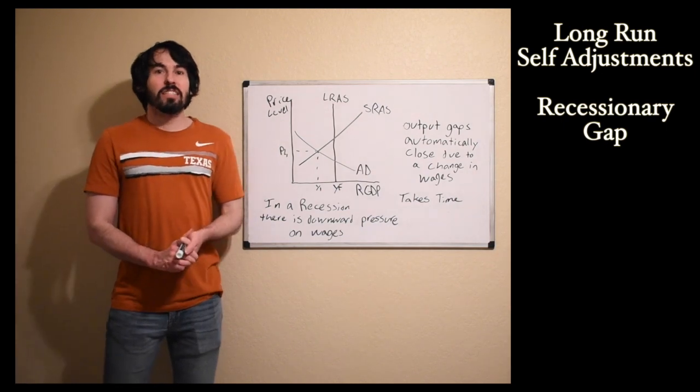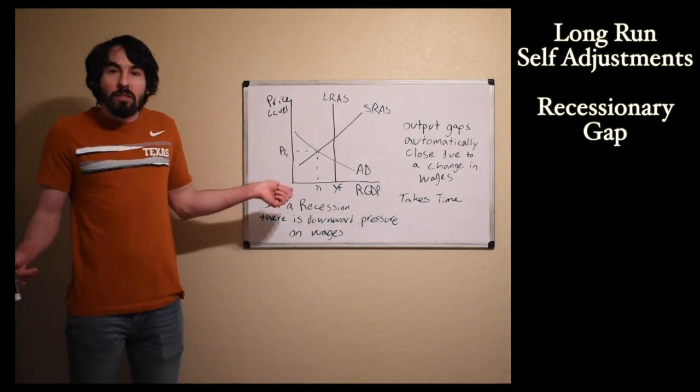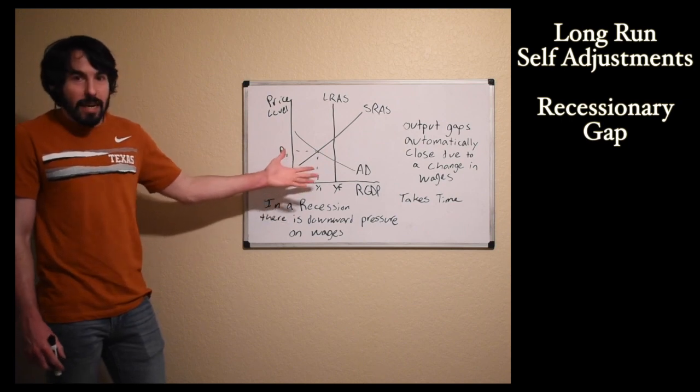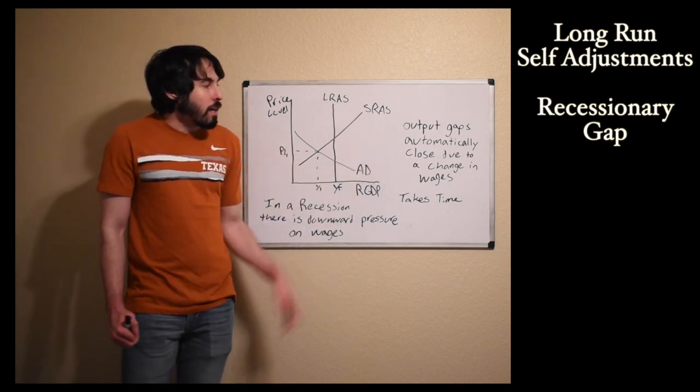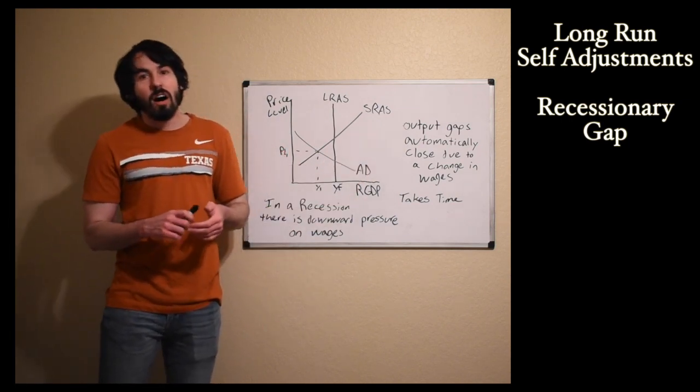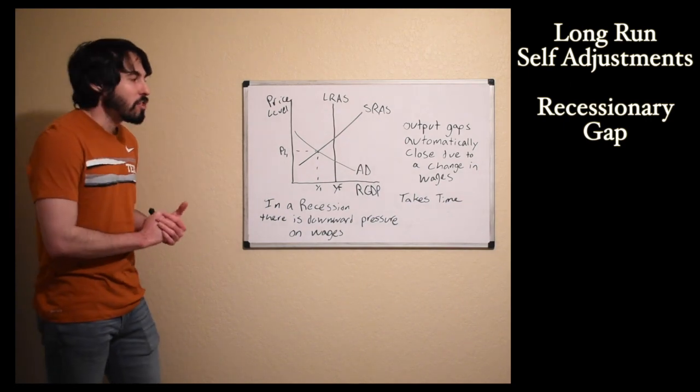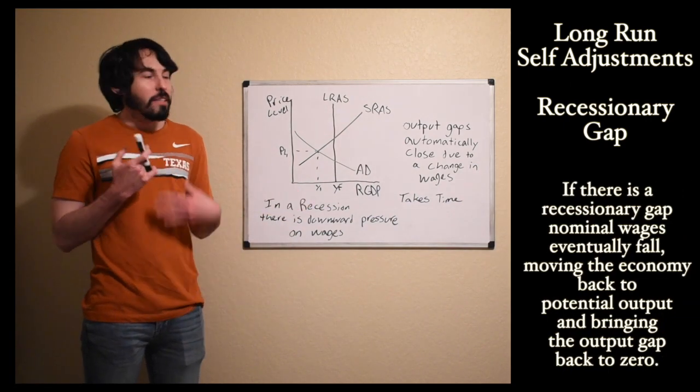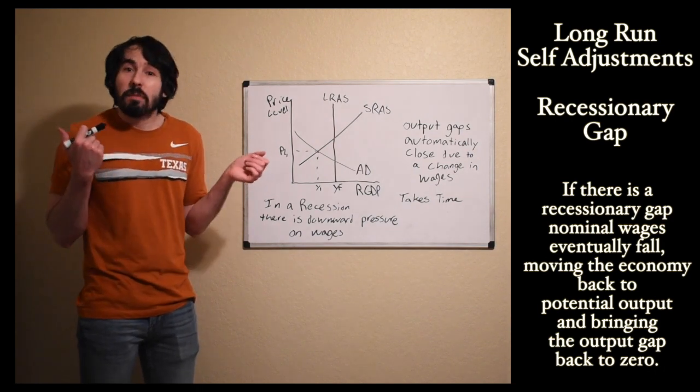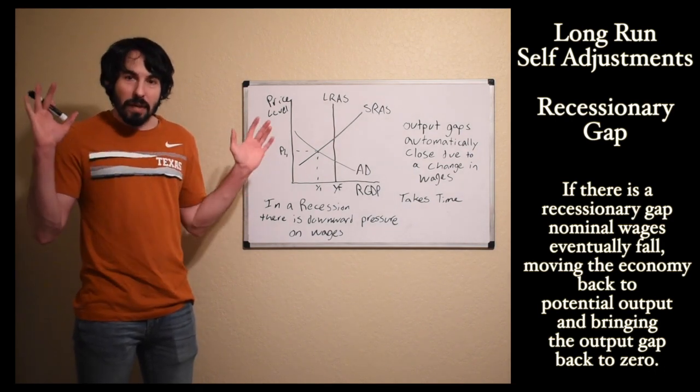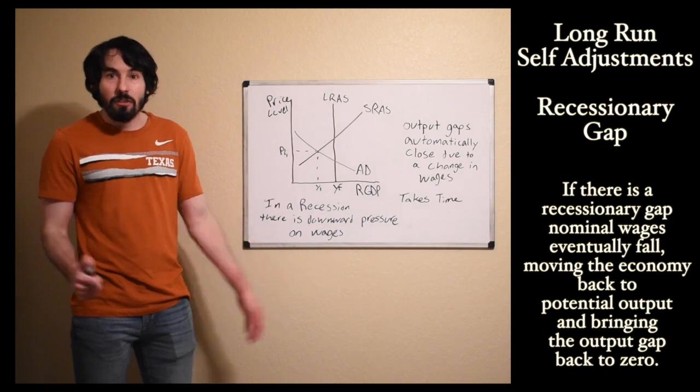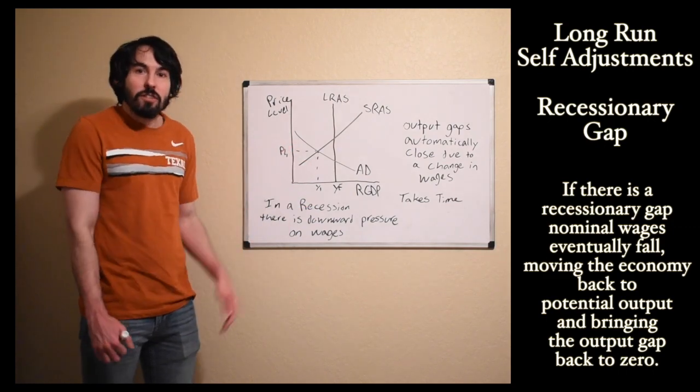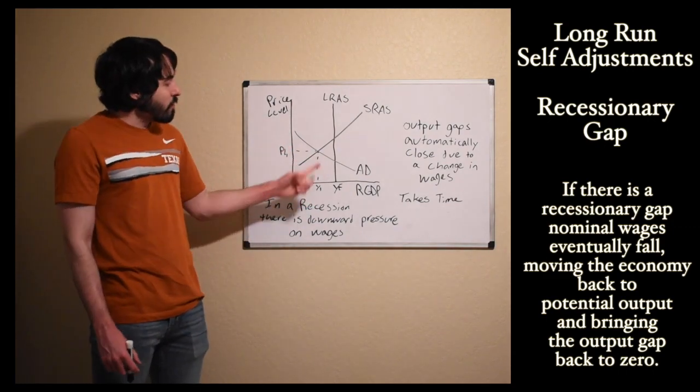Okay, next we're going to talk about how output gaps close. Output gaps like a recessionary gap can close automatically. They're going to close automatically due to a change in wages. We've read Adam Smith and saw that our economic system is based on the idea of laissez-faire - sit back and let the market correct itself. Well, this is how the market actually corrects itself.